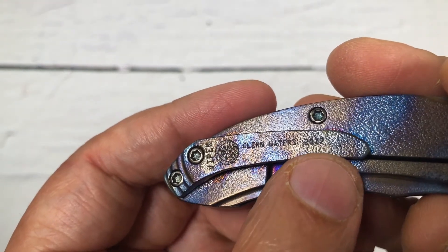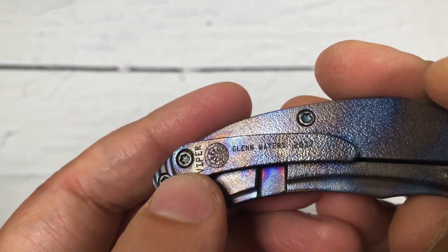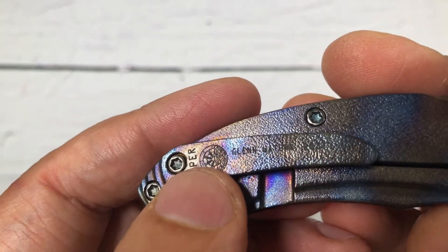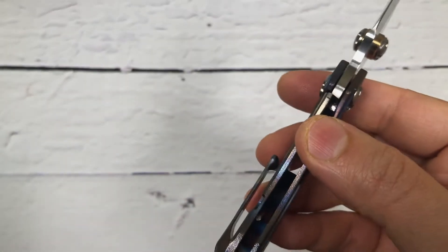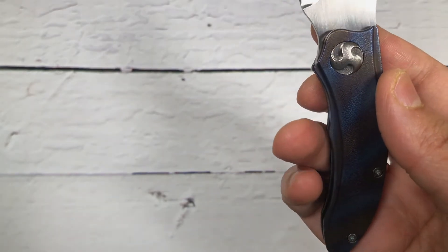With Glenn Waters, he always mentions which year he made that particular model. This one was made in 2017. Name of the model, his signature, his Japanese theme logo. Fit and finish on his blade is next to none. This one is a flamed version.